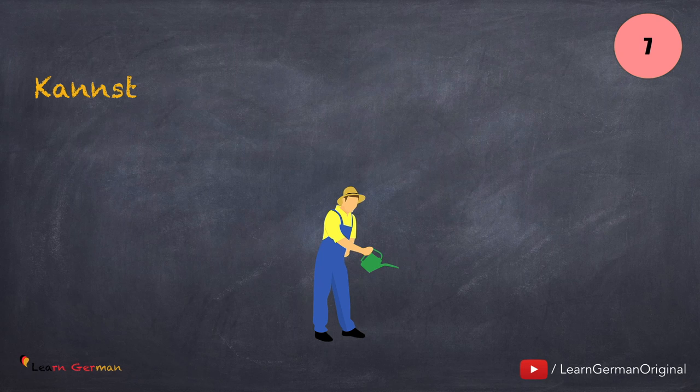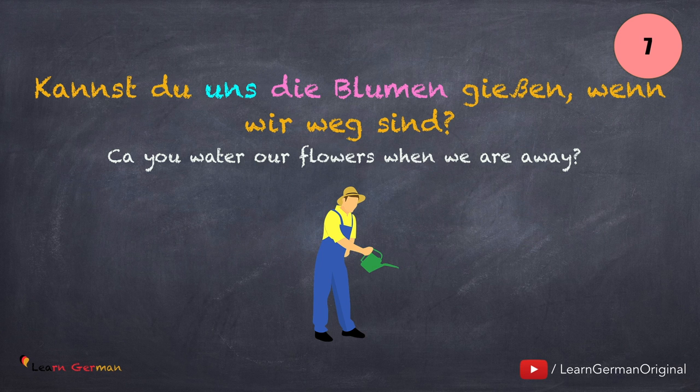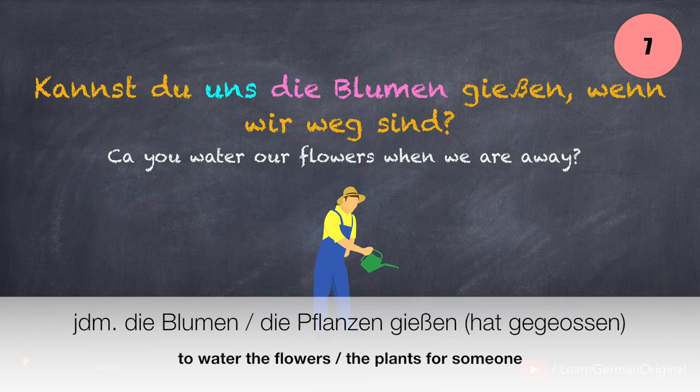The next sentence is: Kannst du uns die Blumen gießen, wenn wir weg sind? Jemandem die Blumen oder die Pflanzen gießen.